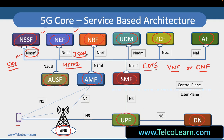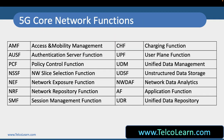In this slide we are going to talk about the abbreviations of all these network functions. The AMF, which is similar to the MME of 4G network, is called the Access and Mobility Management Function. AUSF is the Authentication Server Function, which helps the network to do authentication in the home network. The PCF is similar to PCRF, which does the policy control part.